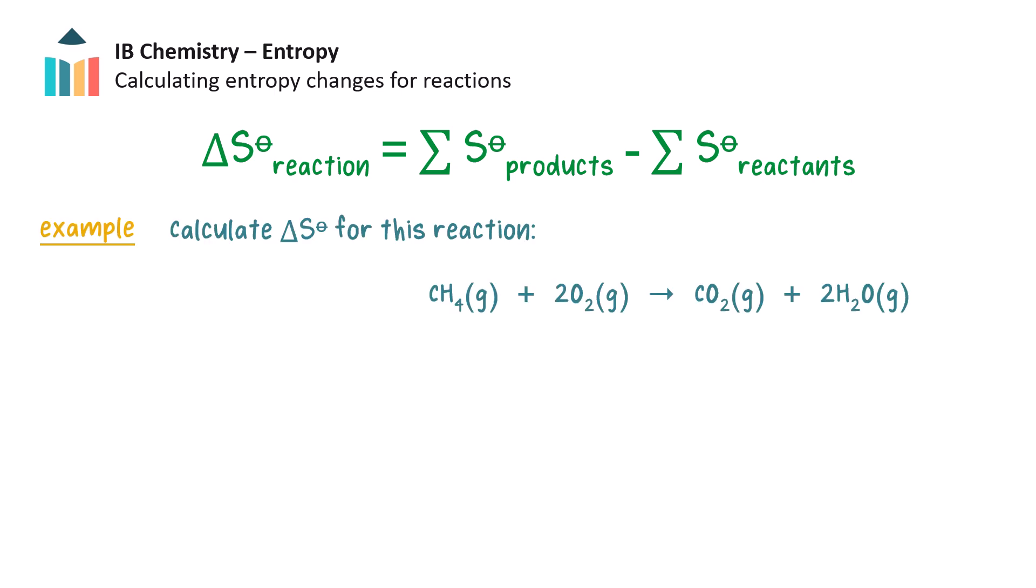In this example, we are asked to calculate the entropy change for the given reaction. Before we start, we notice that 3 moles of gas are being converted to 3 moles of gas. The number of particles is not changing, nor are their states. So the entropy change will likely be a small value, based only on the nature of the species.